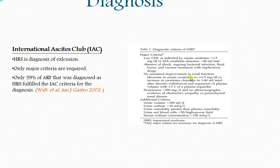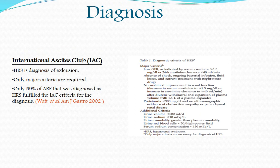Diagnosis of HRS is defined by the International Ascites Club. Major criteria include: low GFR as indicated by serum creatinine greater than 1.5 mg/dL; absence of shock, bacterial infection, fluid loss, or treatment with nephrotoxic agents; no sustained improvement in renal function after stopping diuretics and administering volume with plasma expanders; and no evidence of kidney damage such as proteinuria or ultrasound evidence of obstructive uropathy or parenchymal renal disease.